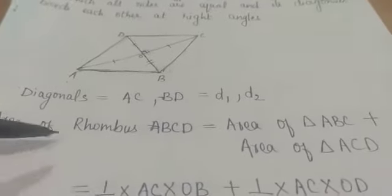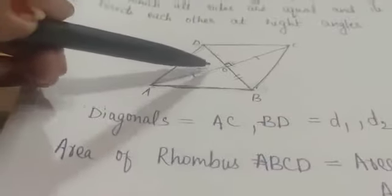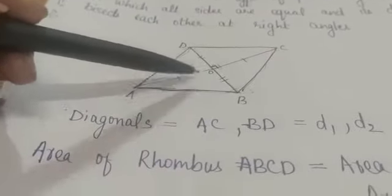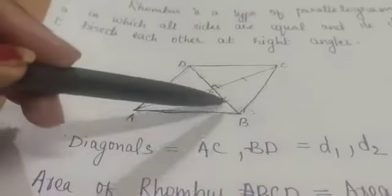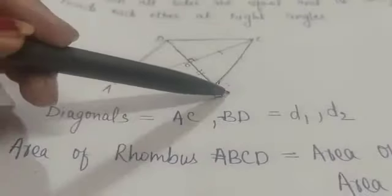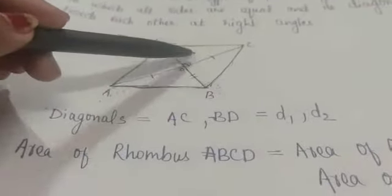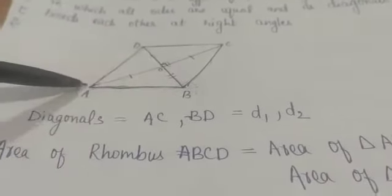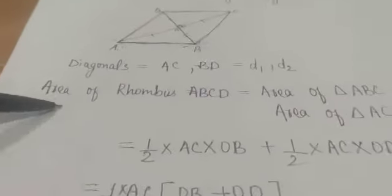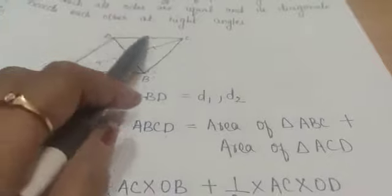The area of rhombus ABCD — as we can see in this figure, there are basically four triangles, but we can divide the whole rhombus into two triangles: triangle ABC and triangle ADC. These two triangles together make the rhombus ABCD. So, area of rhombus ABCD equals area of triangle ABC plus area of triangle ACD.